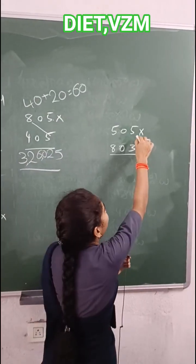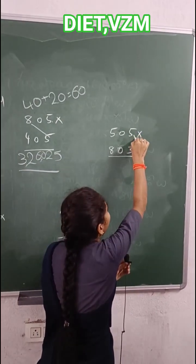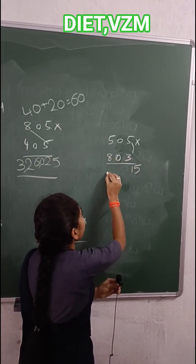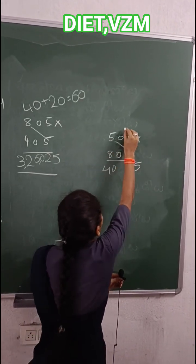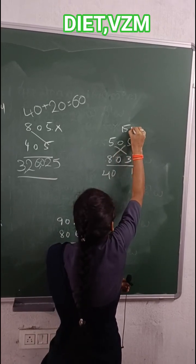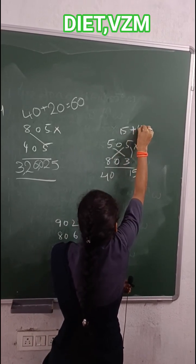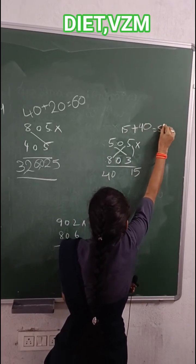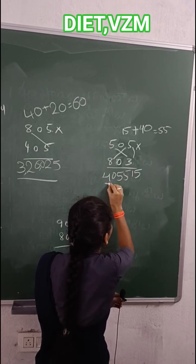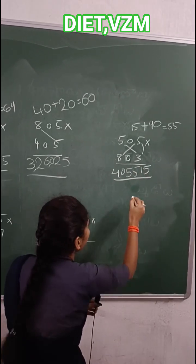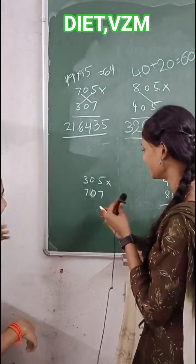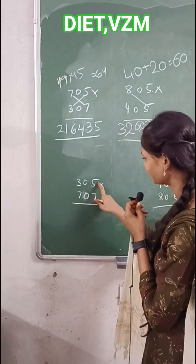Now, product of these 2 numbers. 5×3 is 15. After, 5×8 is 40. 5×3 is 15. 8×5 is 40. 55.